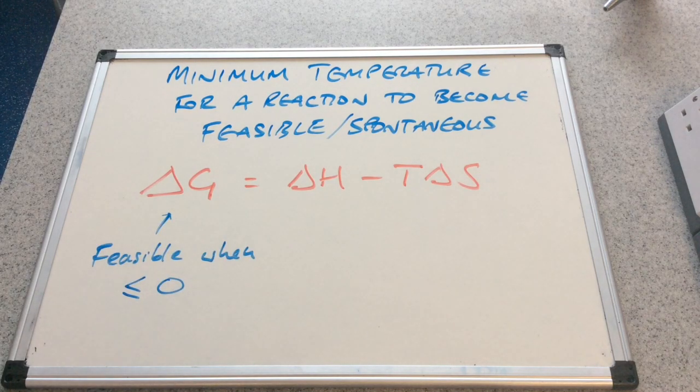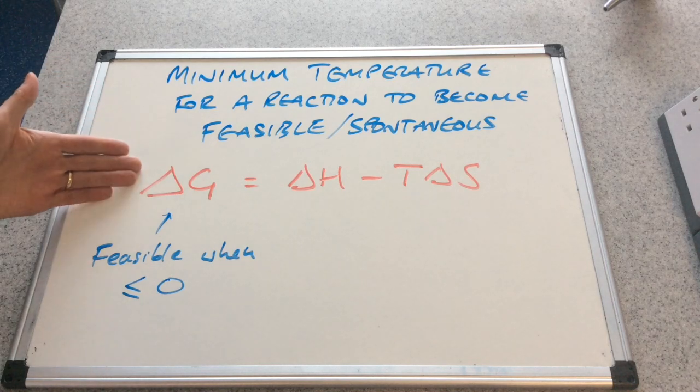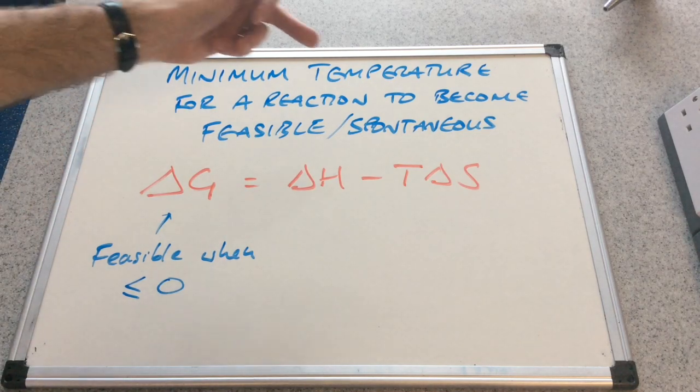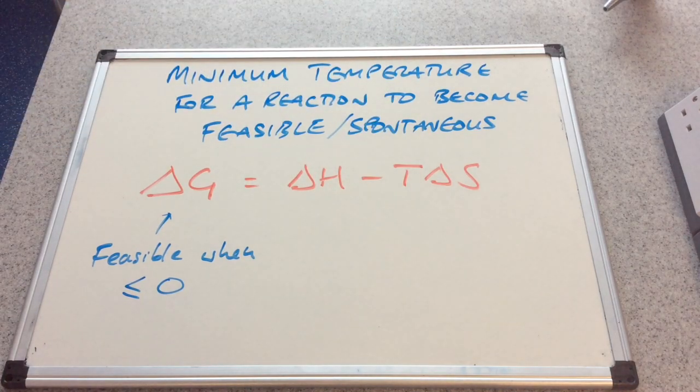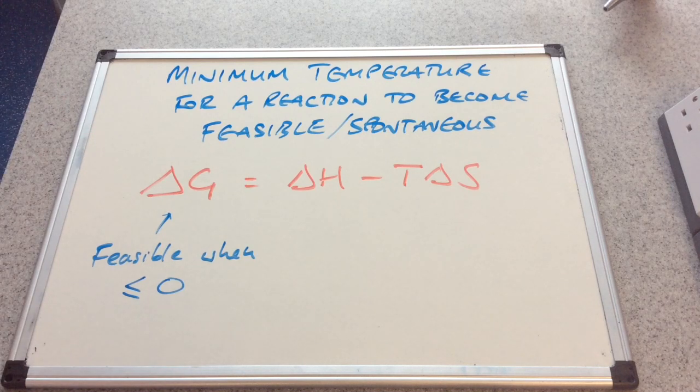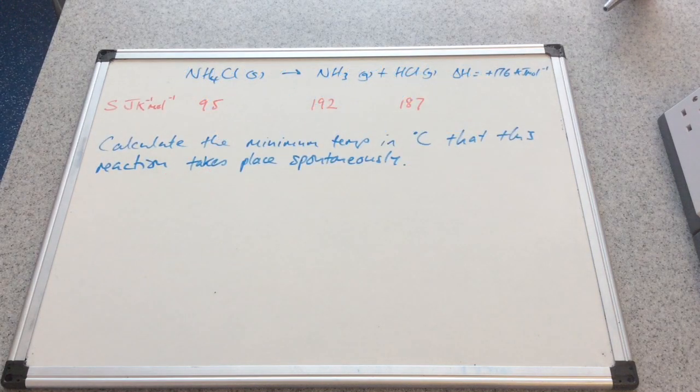So all we're going to do is set delta G at zero, rearrange and solve for T. So what we'll do is find the temperature that would give us zero delta G, and that's going to give us the minimum temperature for this reaction to become feasible or spontaneous.